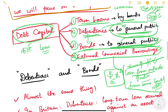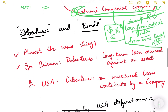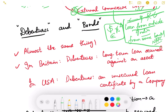For now, term loans and external commercial borrowings do not need detailed discussion. We will cover ECBs when we study balance of payments and international finance. Let us now focus on debentures and bonds.